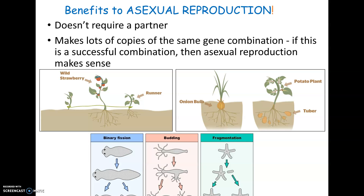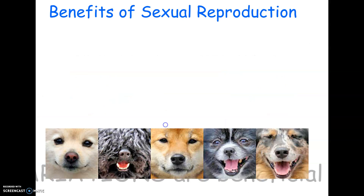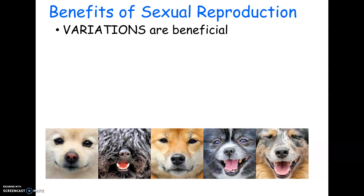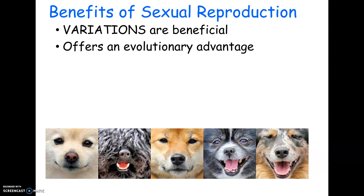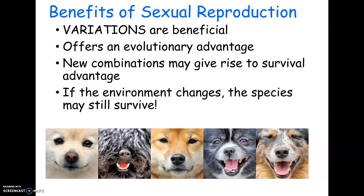The benefit of sexual reproduction is that it creates variation, because not every trait an organism has is necessarily a benefit — especially if the environment changes. Sexual reproduction offers an evolutionary advantage: if the environment changes, such as getting colder, oxygen levels dropping, or a virus coming through, having organisms with different gene combinations means that somebody in that population may be able to survive and the species will still persist.